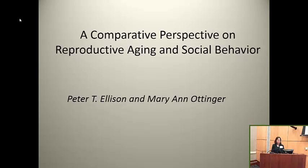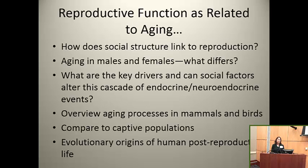We concentrated on studying aging across different classes of organisms — not surprisingly, primates, humans, and birds. When we talk about aging, what does this really mean? How do we link aging to reproduction? What differs in males and females? What are the key drivers? I'll talk a little bit about mechanisms, and then how social factors can alter these.